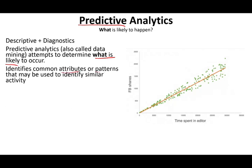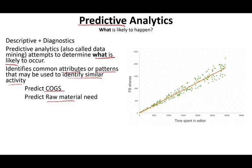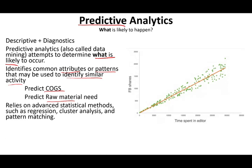Predictive analytics identifies common attributes or patterns used to identify similar activities. A basic example in business is advertising spend versus sales — if we spend more on advertisement, sales should go up. You can also try to predict cost of goods sold: what's driving it? Is it raw material, the supplier, the quality, or employee training? This system relies on advanced statistical methods like regression, cluster analysis, and pattern matching, and involves applying assumptions to data to predict future results.